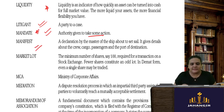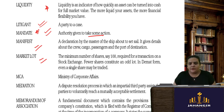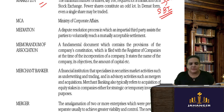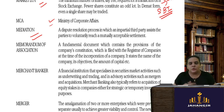A litigant is a party to a case. Mandate is authority given to take some action. Manifest is a declaration by the master of a ship about to set sail — it gives details about the crew, cargo, passengers, and port of destination. Market lot is the minimum number of shares required to invest — for example, in SBI's IPO, one lot consisted of 500 shares.